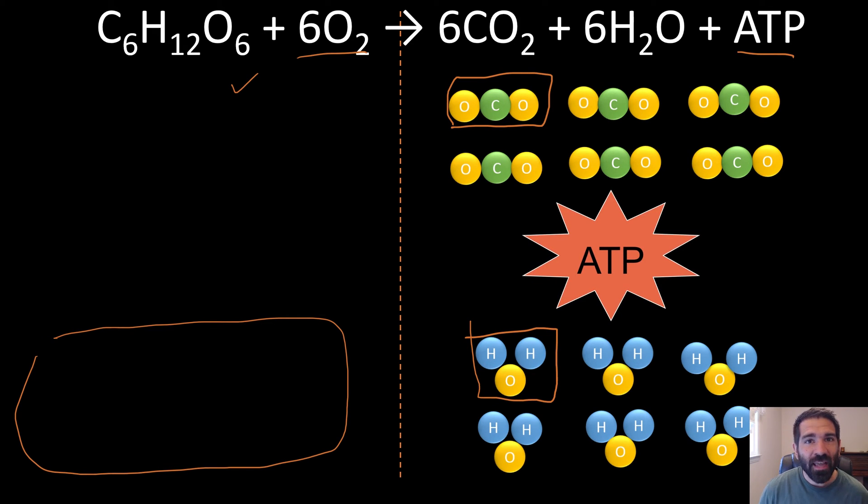ATP is an energy rich molecule. You can think of it like a charged battery. It can be used to do all sorts of different types of work within the cell.